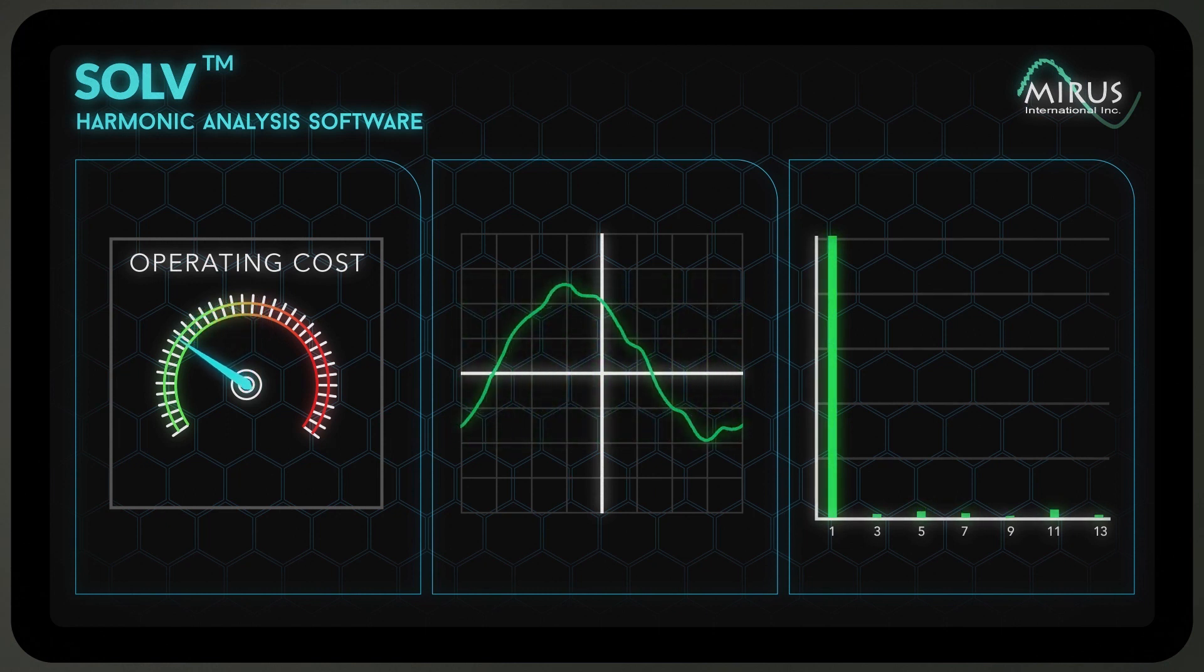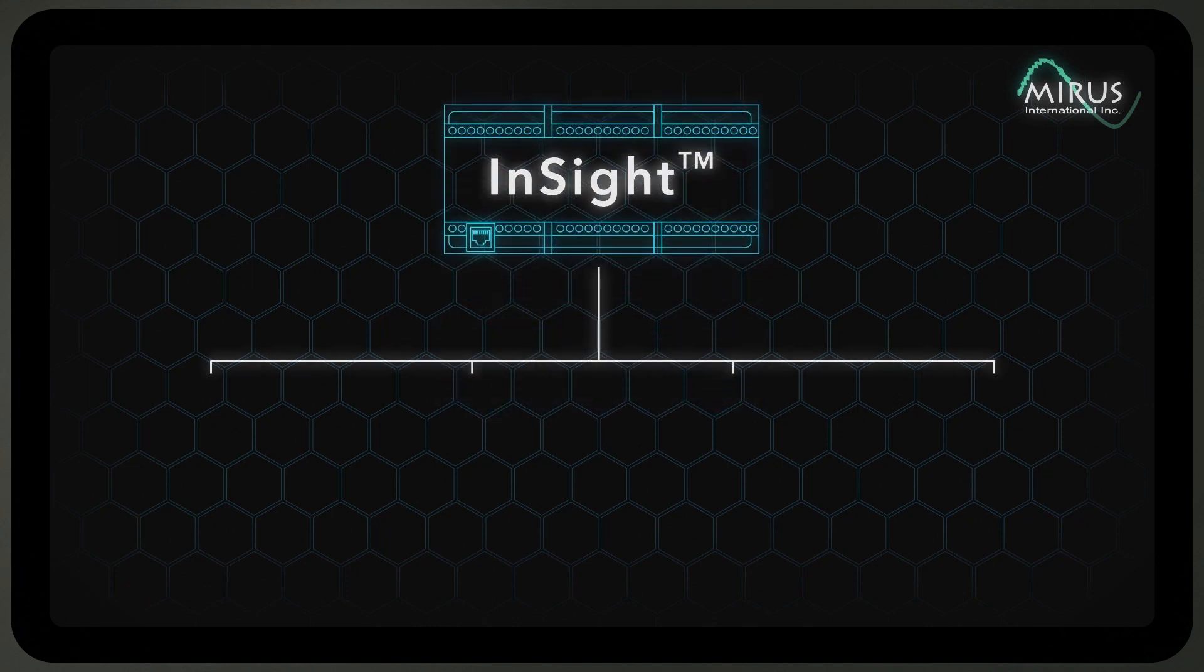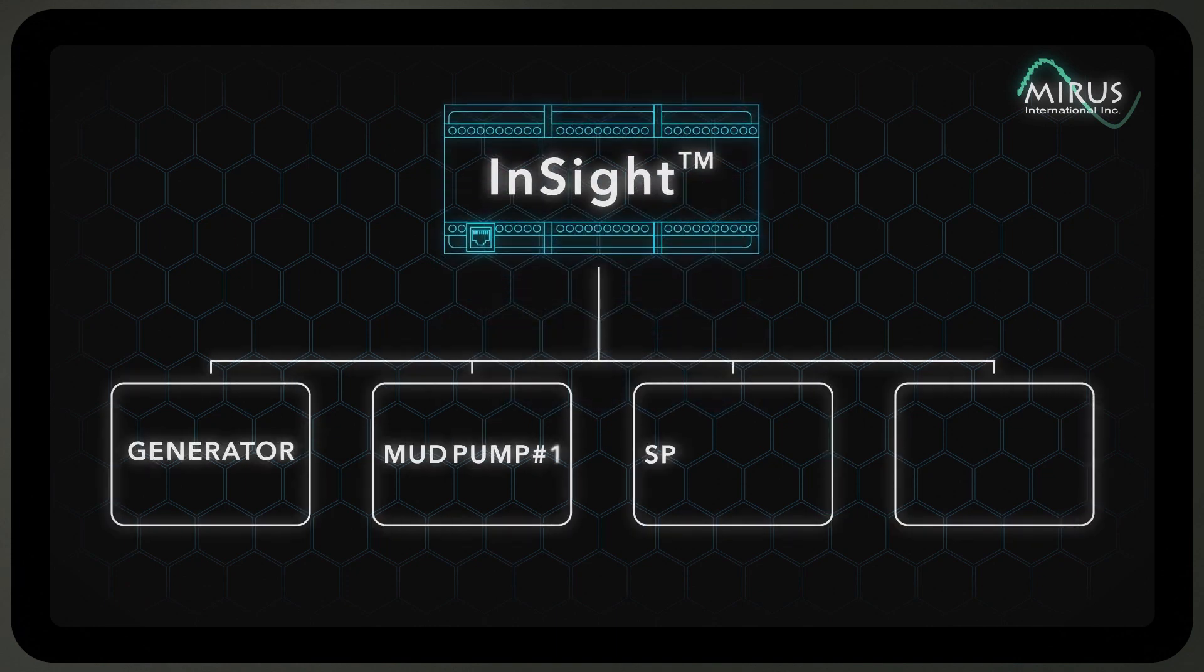This means you'll get the best performance possible while reducing your energy usage and operating costs. Finally, INSIGHT is a highly accurate power meter and alerting system that will let you know how your critical equipment and systems are operating in real time.